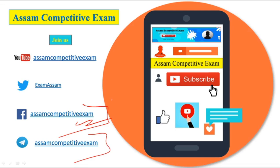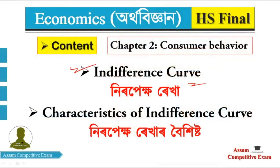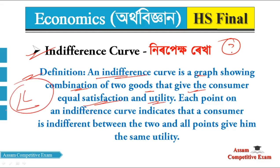Once we have discussed the first question of characteristics of the indifference curve — first of all, what is the indifference curve? The definition of the indifference curve is a graph showing combinations of two goods that give the consumer equal satisfaction and utility. We have to explain the utility concept.